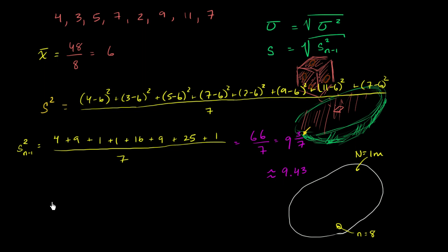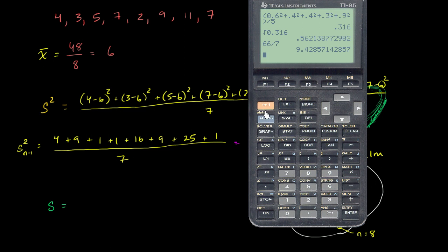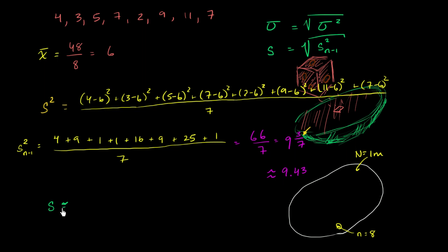We'll call it the sample standard deviation. We're going to define it to be equal to the square root of the unbiased sample variance. And we could take our calculator out. It's going to be the square root of that, which is approximately equal to 3.07.